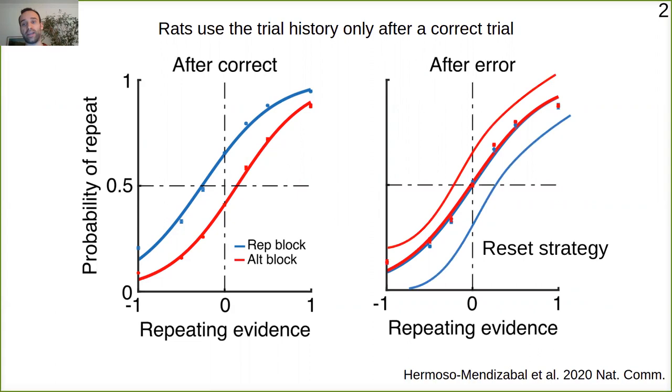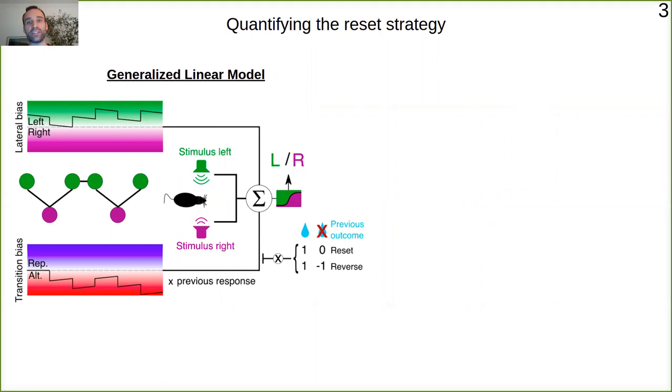It is a strategy that is not optimal. The ideal observer would do something like that. This is just a cartoon trace, but you can see that the ideal observer should switch the bias after an error temporarily. So we decided to investigate further how this reset strategy could arise.